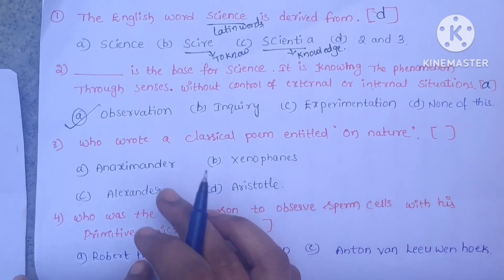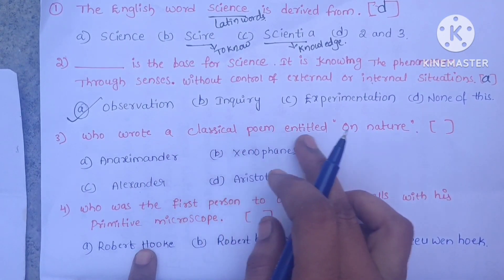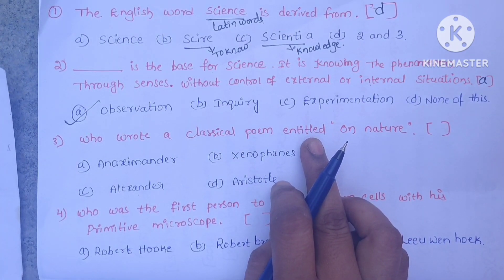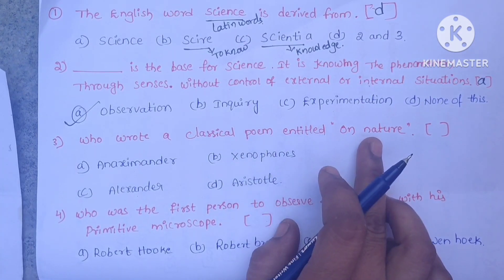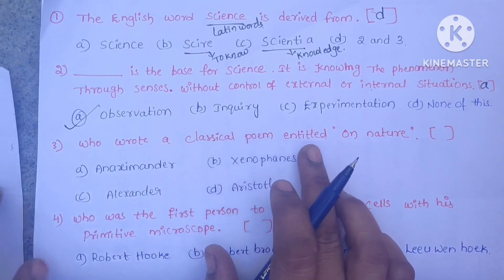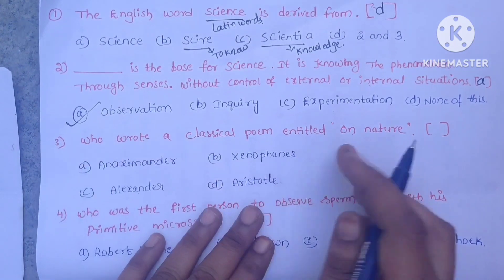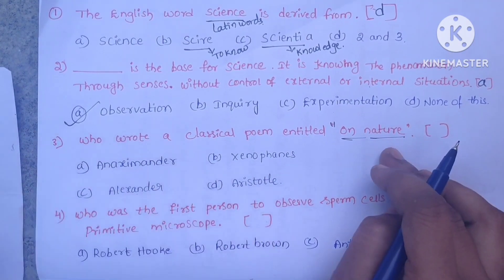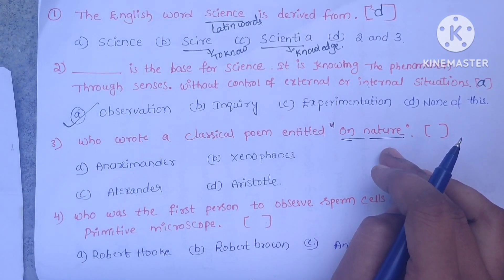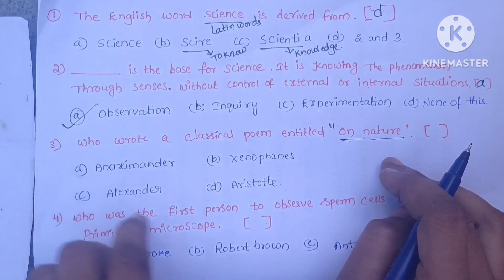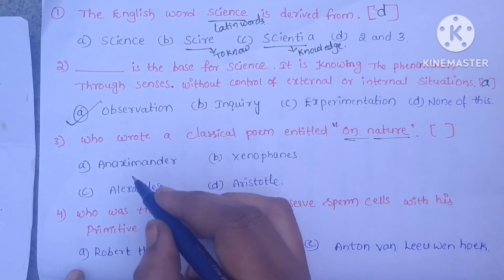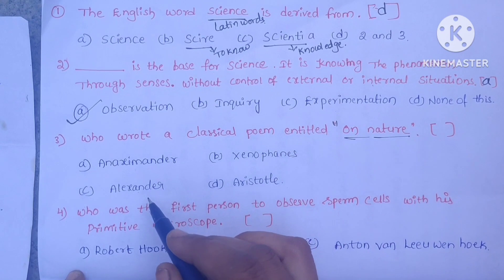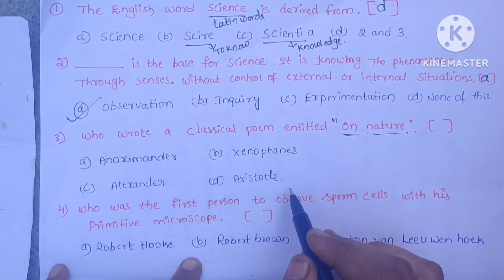The third question is: who wrote a classical poem entitled 'On Nature'? Options: A. Anaximander, B. Xenophanes, C. Alexander, D. Aristotle.